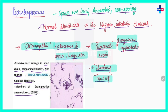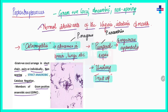Peptostreptococcus causes suppurative lesions with pus. The abscesses in lungs and brain are mostly caused by a subspecies called Peptostreptococcus magnus. Puerperal sepsis is caused by Peptostreptococcus anaerobius. We also have Peptostreptococcus asaccharolyticus and Peptostreptococcus tetradius, which are commonly found in clinical specimens.